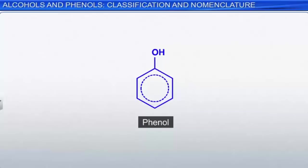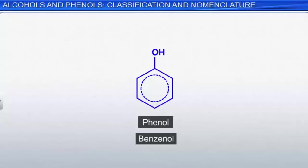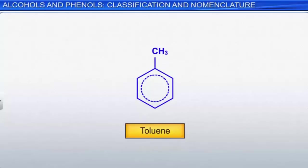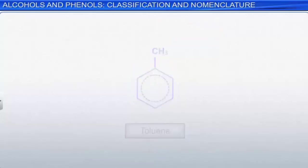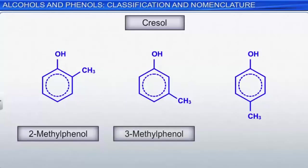Let's turn to phenols. 'Phene' is an old name for benzene, so benzene with one hydroxyl group is known as phenol — an accepted IUPAC name. Toluene is an important benzene derivative with one methyl group. Cresol is the name for toluene molecules that have one hydroxyl group in addition to the methyl group, with three isomers: 2-methylphenol, 3-methylphenol, and 4-methylphenol.